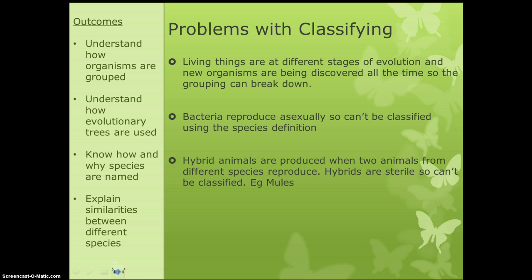There are problems with classifying. It's basically because all living things are at different stages of evolution, so they might have been around longer than others, and it's hard to group them in really solid ways because the groups can break down — creatures could belong in more than one group at a time. We also have a problem because bacteria reproduce asexually, splitting themselves in half, so strictly they don't have a species, since a species requires fertile reproduction. So bacteria don't fit neatly into the species category.